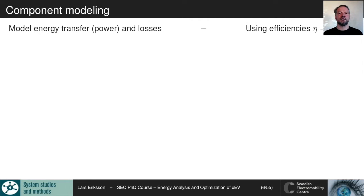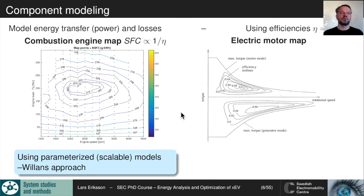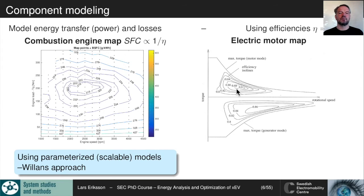In the modeling, we focus on describing energy transfers and losses in the components using efficiencies. We have two figures: one is an internal combustion engine map plotted in specific fuel consumption, which is proportional to one over efficiency, showing the most efficient region. The other is an electric machine map operating in motor mode and generator mode. We use scalable models such as Willems' approach to model losses and theoretical efficiency.